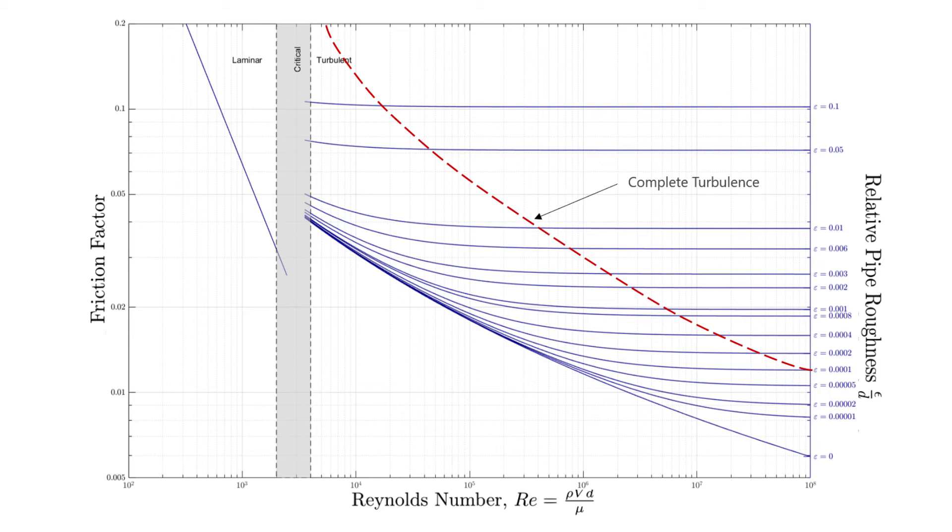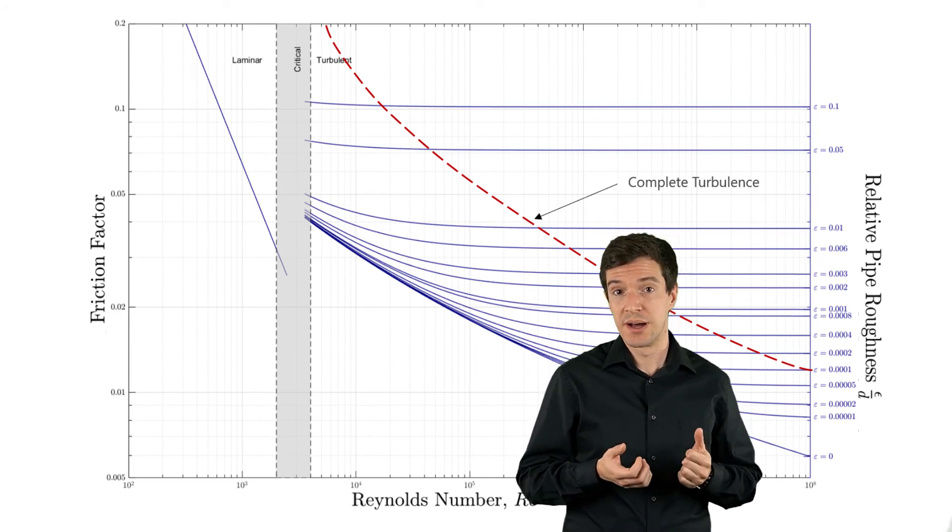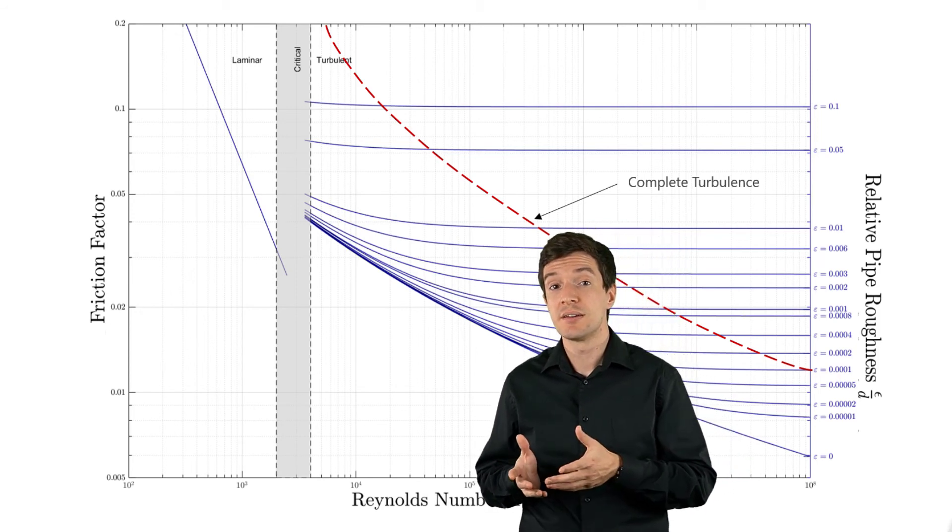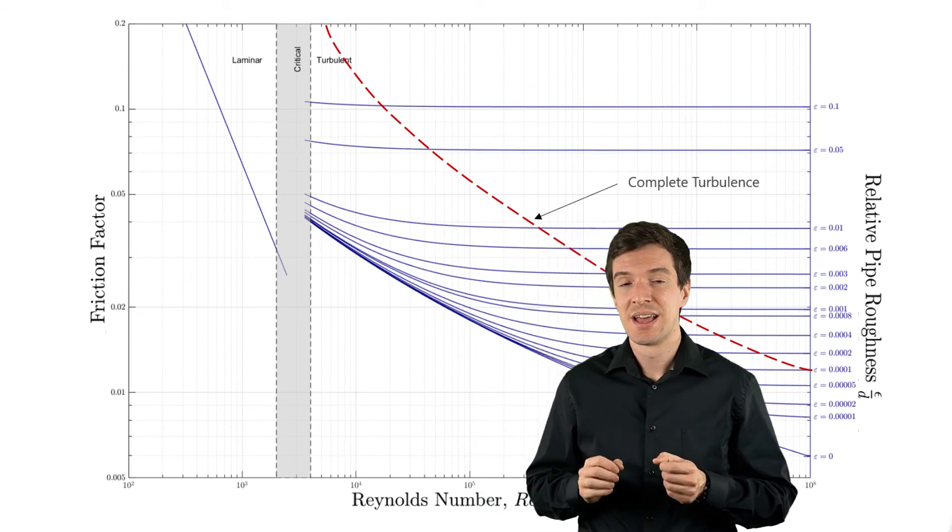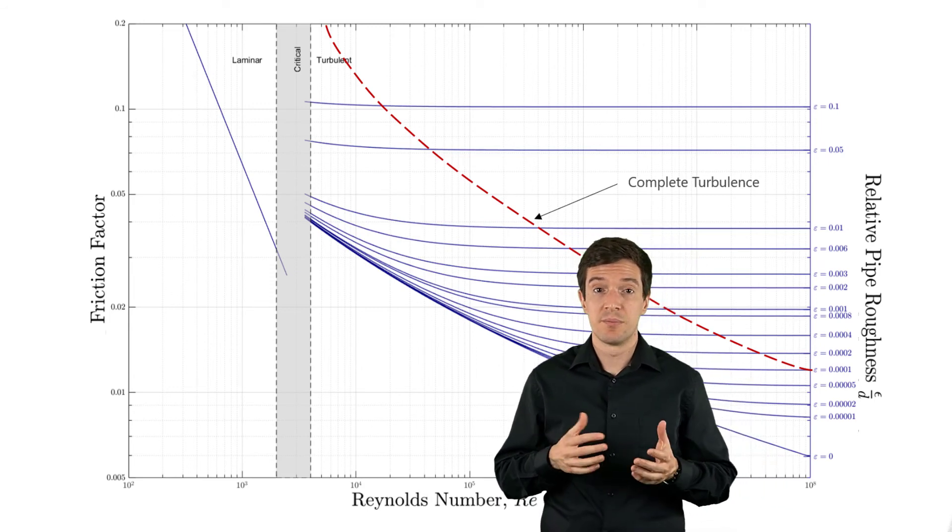As you can see, the laminar flow is independent of the wall roughness. This because the laminar layer extends up to the centerline of the pipe, while in turbulent flows, the laminar layer is really thin, and is directly affected by the surface roughness of the pipe.